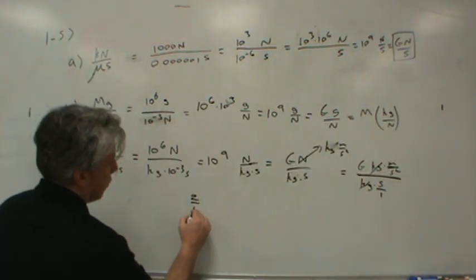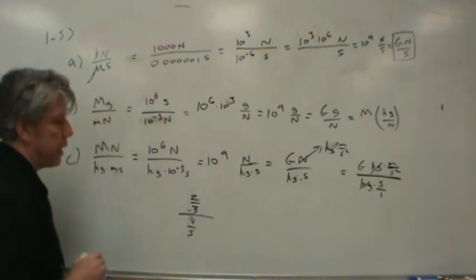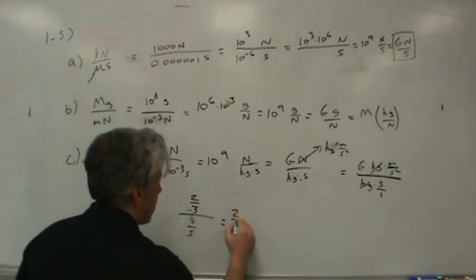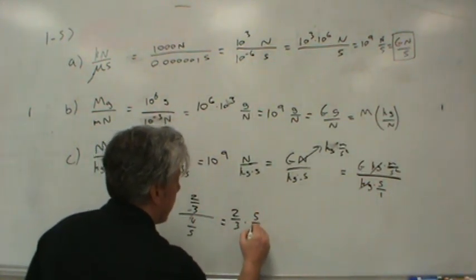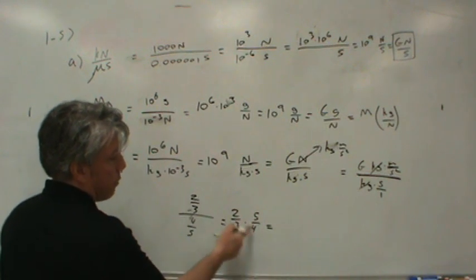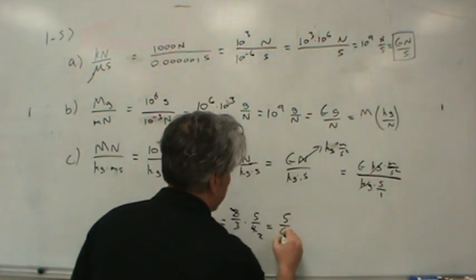Well, if you have something like 2 thirds over 4 fifths, how do you simplify a fraction like that? You can invert and multiply. Right? So this is the same thing as 2 thirds multiplied by 5 fourths. Right? So what do we have? Well, we can simplify this just a little bit. I've got a 2 there. And so this is just 5 over 6. Okay. That's nice.